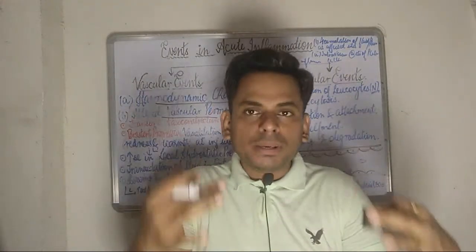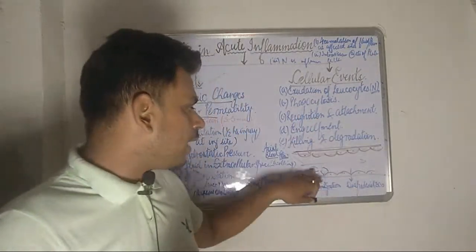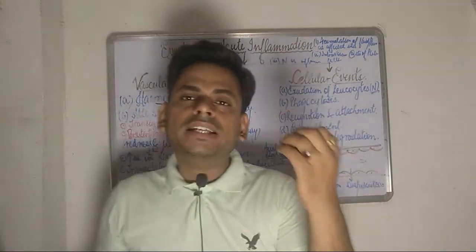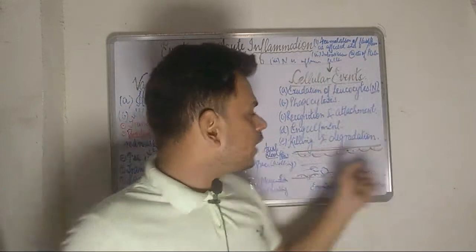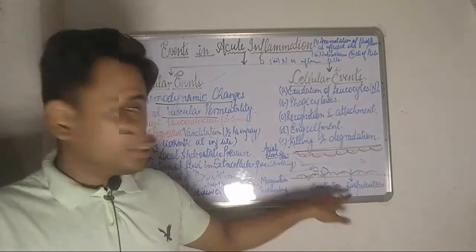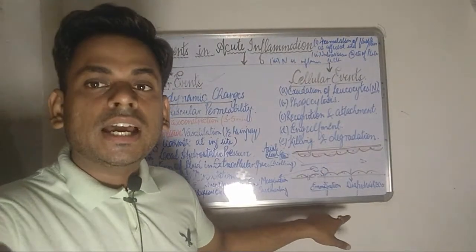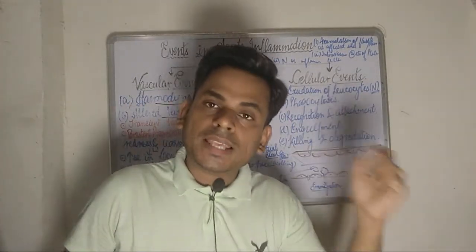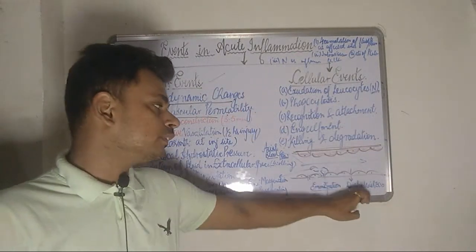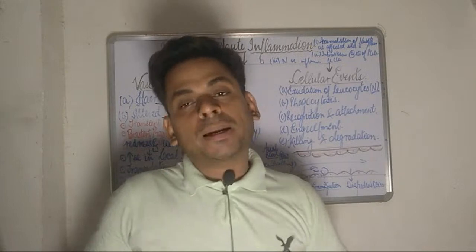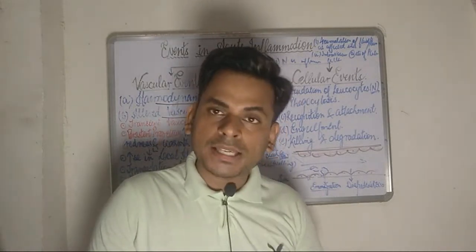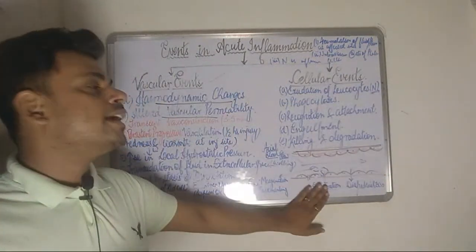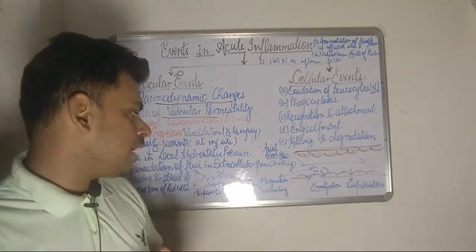As immigration takes place, the neutrophils escape out through the pores. Simultaneously, a certain amount of red blood cells also escape through these pores between the endothelial cells. This process of escape of red blood cells through the endothelial pores is called diapedesis. The term 'diapedesis' is specifically used for RBCs escaping through the pores between endothelial cells, whereas 'immigration' refers to the migration of neutrophils.